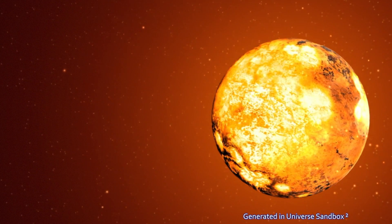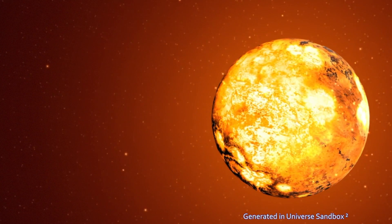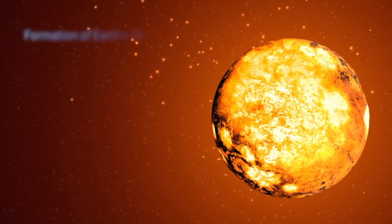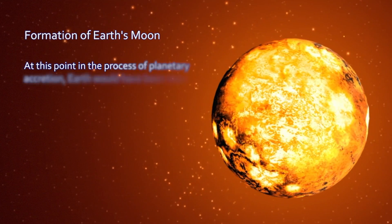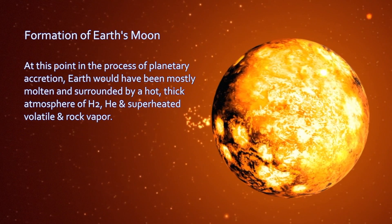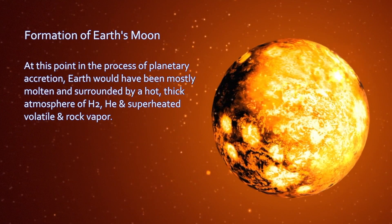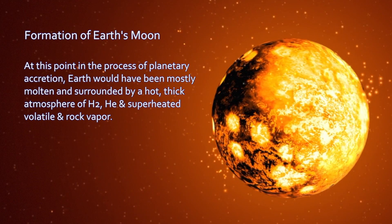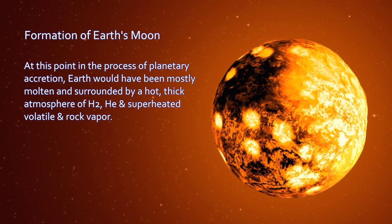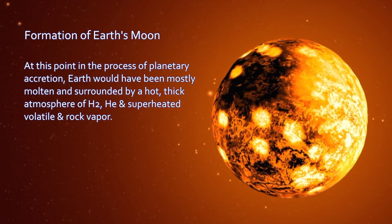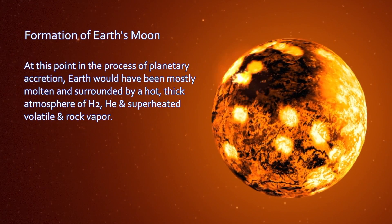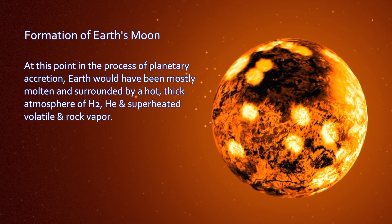Almost immediately after accretion — it's drawing to a close, after about 100 million years — around 4.4 billion years ago, Earth was very much in a molten state, still being subject to impacts from incoming asteroidal and cometary material. The Earth's primary original atmosphere would have been hydrogen, helium, and light volatiles boiled out from the interior, as discussed in the previous module.